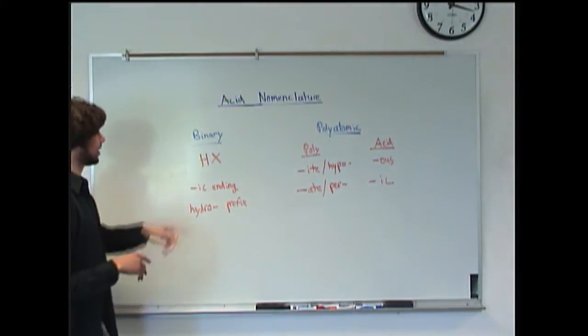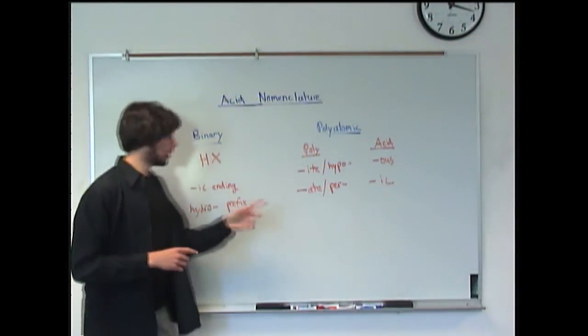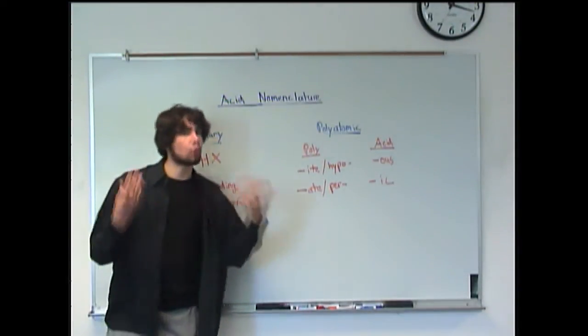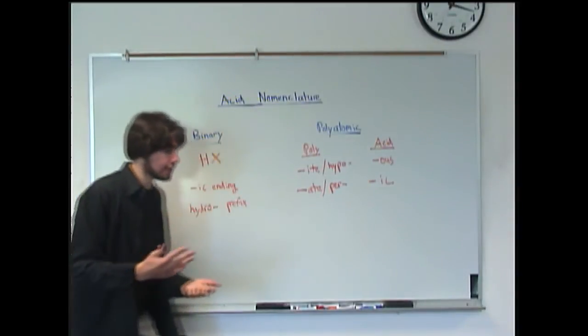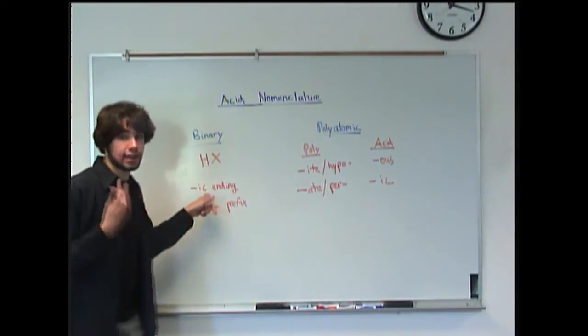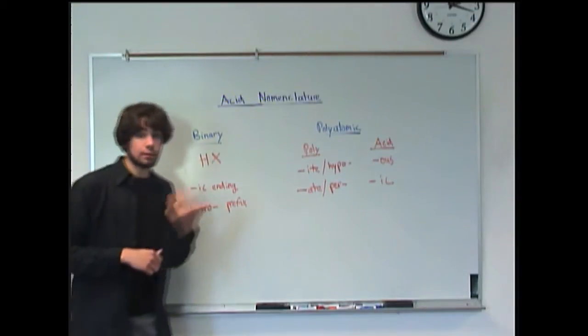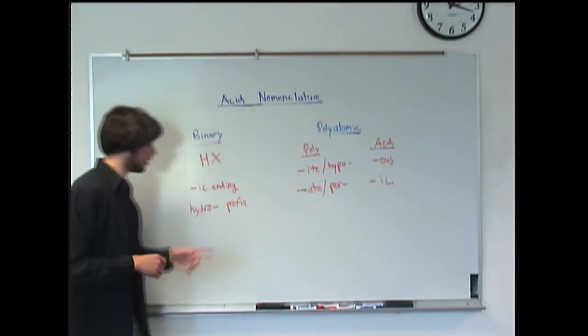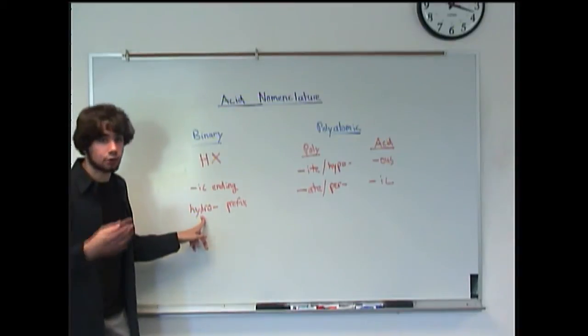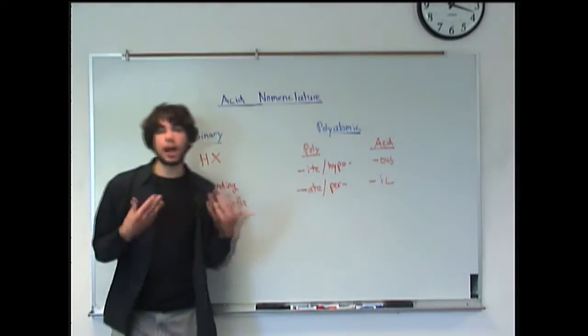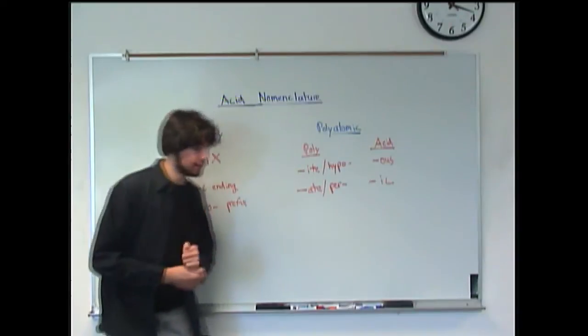So to name these things when you look at your binary acid what you're going to do is look at the element X, which could be anything like chlorine or sulfur whatever you're making the acid out of. And you're going to add an IC ending. On top of that when you make an acid out of a binary compound you're going to be adding the hydro prefix. The hydro is standing for hydrogen to let you know that you got the hydrogen there and it's an acid.